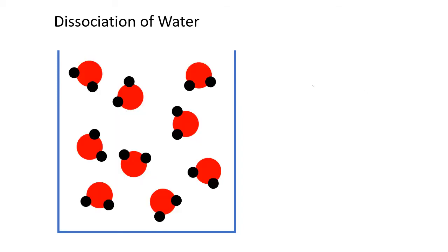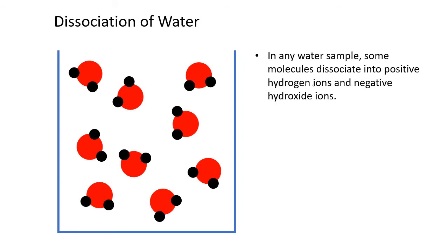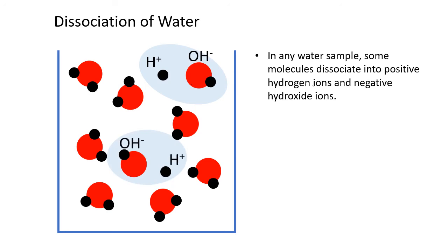We also saw what happened in a typical sample of water. Water doesn't just consist of water molecules. In any water sample at any given moment in time, a small amount of those water molecules will have dissociated into positive hydrogen ions and negative hydroxide ions. And we saw that when that happens, we will always have an equal number of hydrogen and hydroxide ions in pure water.